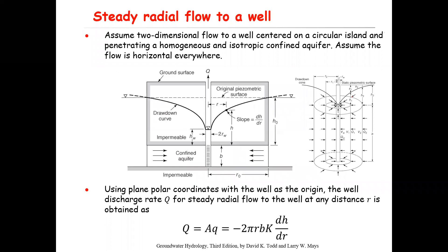Now let's assume we're dealing with a two-dimensional flow to a well centered on a circular island and penetrating a homogeneous and isotropic confined aquifer. Another assumption is that we have horizontal flow everywhere — no vertical flow. Our basic objective here is to calculate the well discharge rate as a function of the other given parameters.